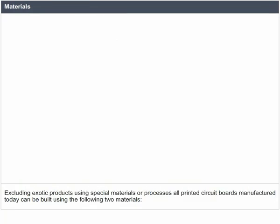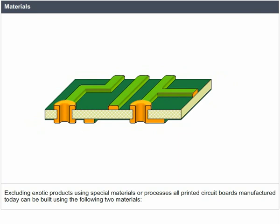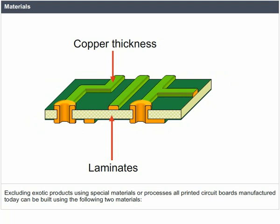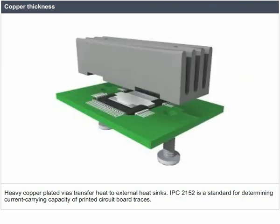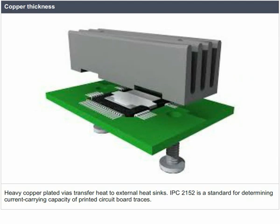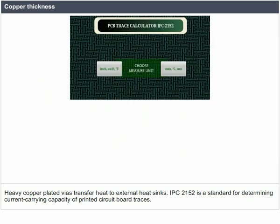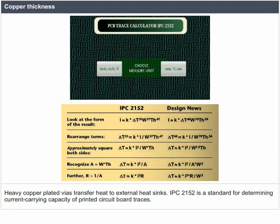Materials: all printed circuit boards manufactured today can be built using laminates and copper-clad laminates. Copper thickness: PCB designers and fabricators often use heavy copper when designing and manufacturing circuit boards in order to increase current carrying capacity as well as resistance to thermal strains. Heavy copper plated wires transfer heat to external heat sinks. IPC 2152 is a standard for determining current carrying capacity of printed circuit board traces.